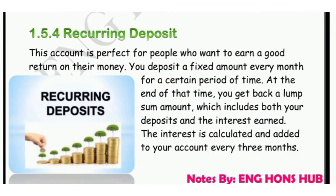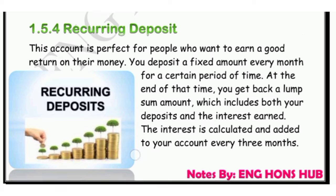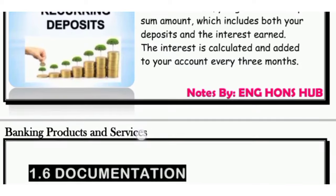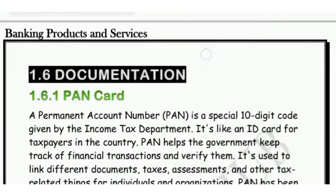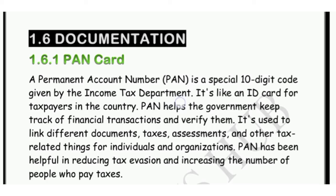Recurring deposit mein at the end hume lump sum money mil jaati hai jismein jitna bhi humne deposit kiya hai woh bhi wapas milta hai aur saath mein jo interest mila hai woh bhi ek saath milta hai. Jo interest hai woh calculate hota hai har ek 3 months baad.